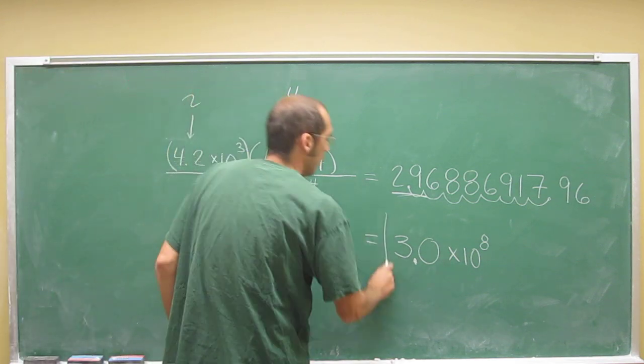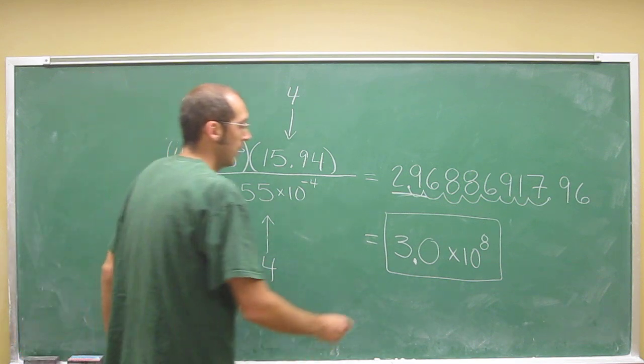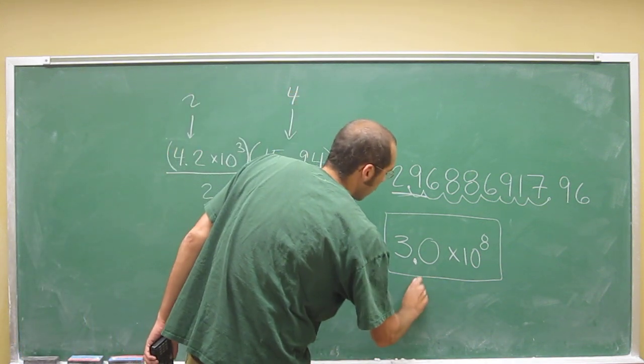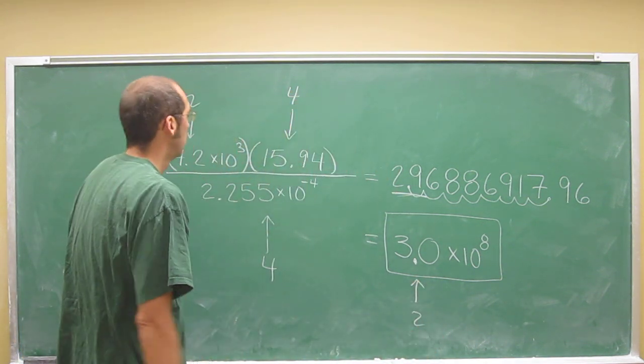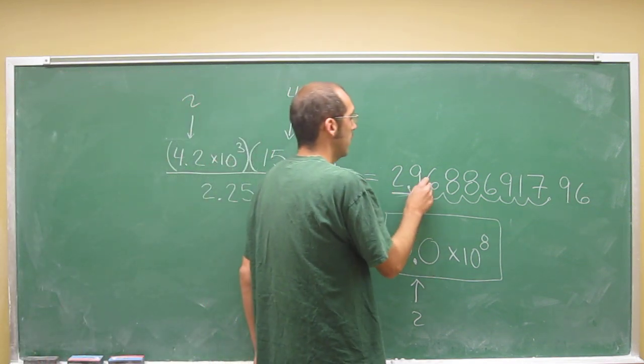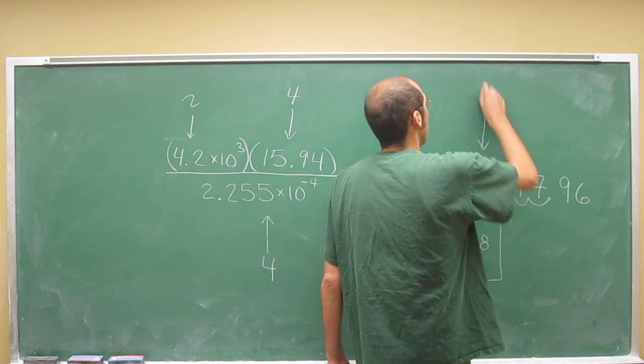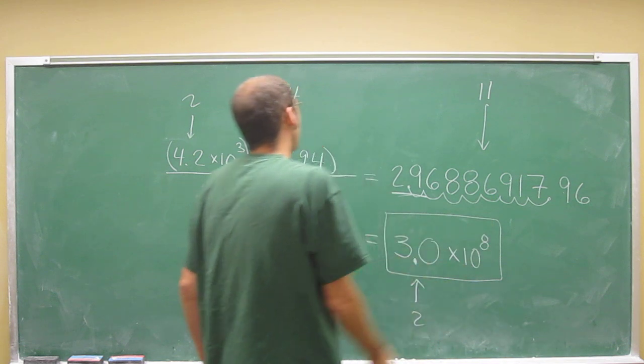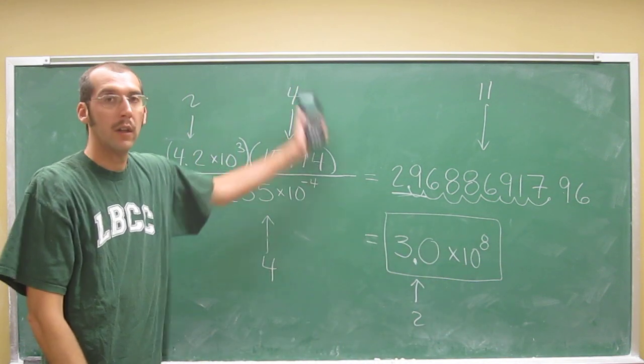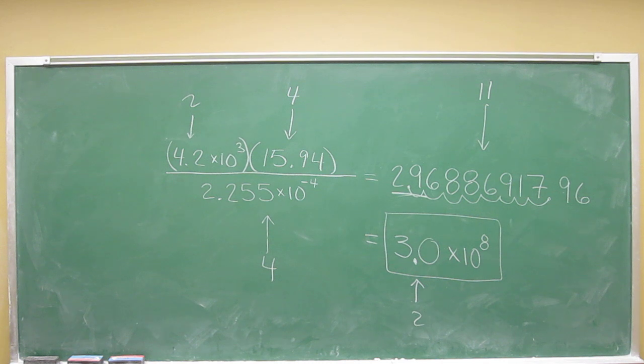So that's reported to the correct number of significant digits. Why? Because you reported it to two, right? And your least number is two. This one was reported to eleven. You can't do that unless your least one over here was eleven. So hopefully that's a good start to the day.